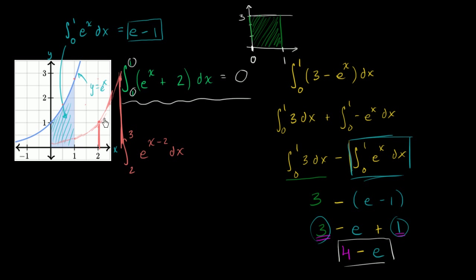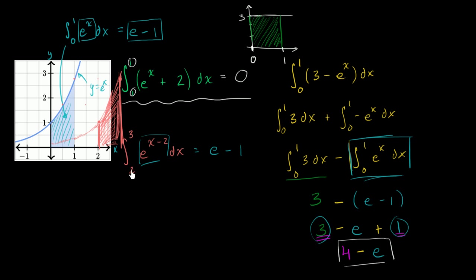We're thinking about this area right over here. We shifted the curve of e to the x minus two to the right by two, and we also shifted the interval we're finding the area under by two. So this is going to have the exact same area — I just shifted everything to the right by two. This area is also going to be e minus one. You just have to realize this is a shifted version of that, and that we shifted both bounds to the right, as we saw in one of the integration property videos.